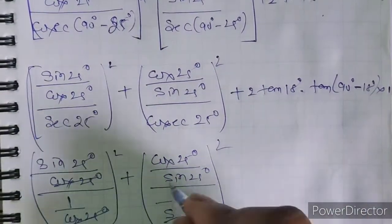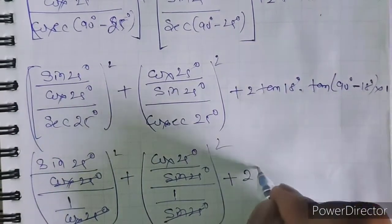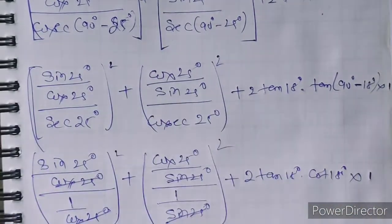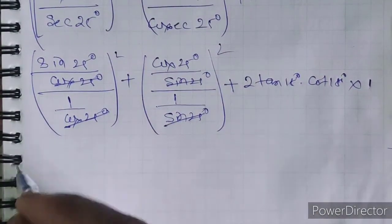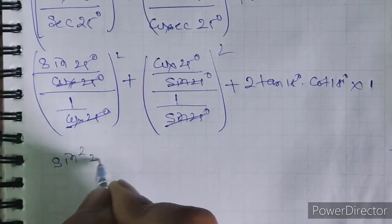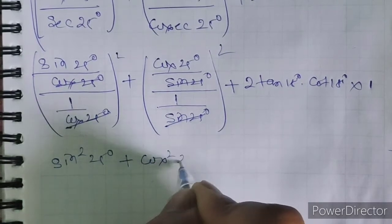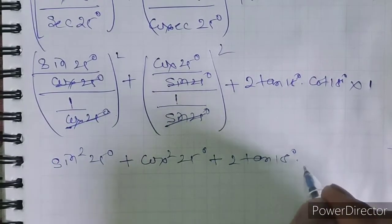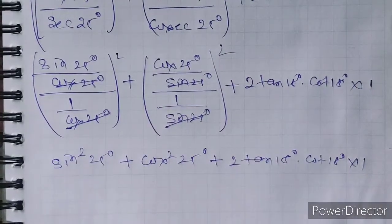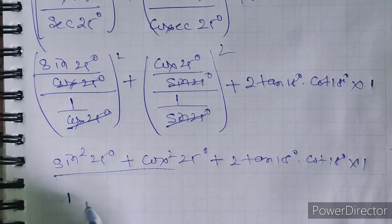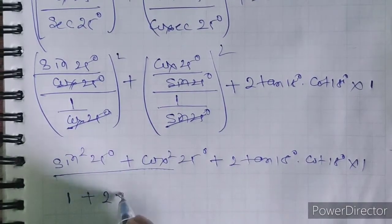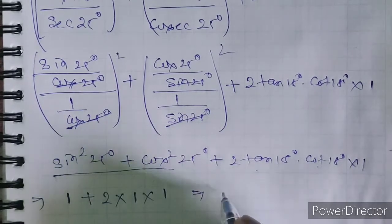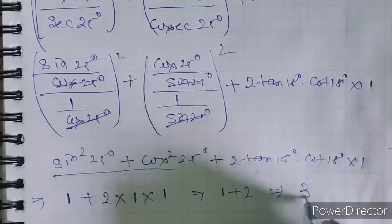Since tan theta into cot theta equals 1, the expression becomes 1 plus 2 times 1, that is 1 plus 2 equals 3. So the answer is 3.